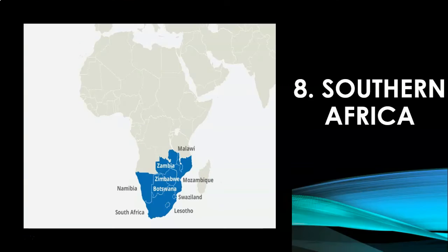Southern Africa. Most of southern Africa is a plateau region. This region is covered with grasslands known as veldt. The Kalahari Desert lies in the south and the Namib Desert is along the southwest shore of Africa. The Kalahari is not actually a desert but a bushy scrubland situated between the Orange and Zambezi rivers.